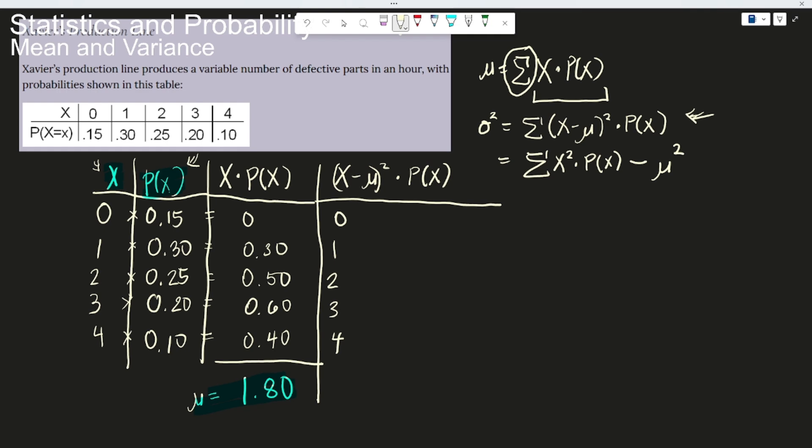We have the mu which is 1.80. Then just do the operation. And then you have to substitute the corresponding probabilities per row. Okay? So like for example, 0.15. So we'll see it here. And so on and so forth. And after substituting all of them, we need to calculate. Okay? One by one.